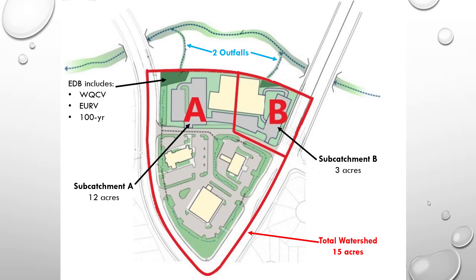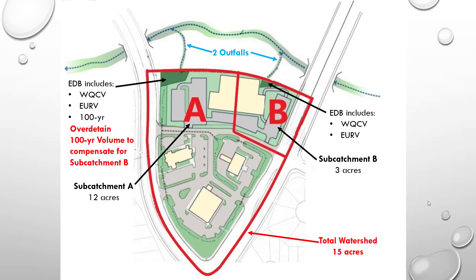The smaller 3-acre sub-catchment B drains to a second on-site extended detention basin that will provide the required storage for the water quality capture volume and excess urban runoff volume, but does not provide the required 100-year detention volume due to site constraints. To address this issue, the extended detention basin for sub-catchment A will include an enlarged 100-year detention volume with a reduced 100-year allowable release rate, to compensate for the 3-acre sub-catchment that does not provide 100-year flood control.